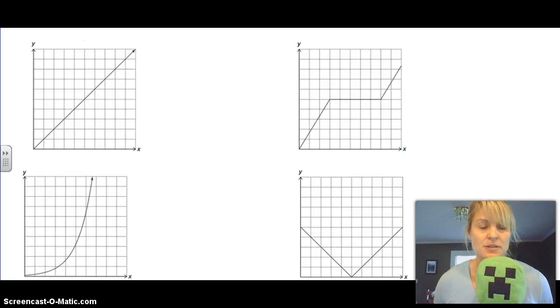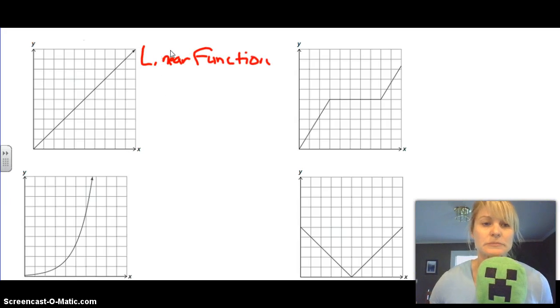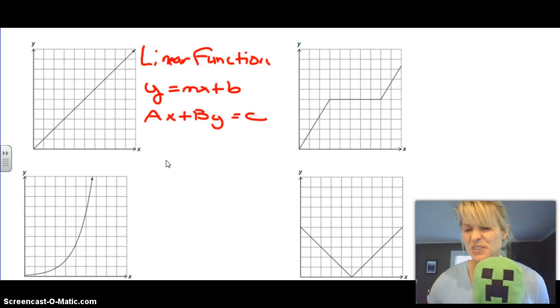Let's look at the first type of graph. Draw yourself a little sample in your notes. This is something I'm pretty sure everyone knows - this is the linear function. The equation we use for linear function is usually slope-intercept form, y equals mx plus b, or sometimes we have standard form, which is ax plus by equals c. We'll get more involved in that later.